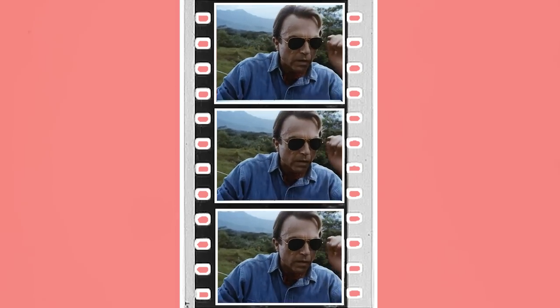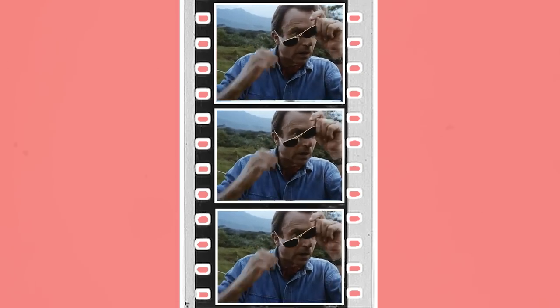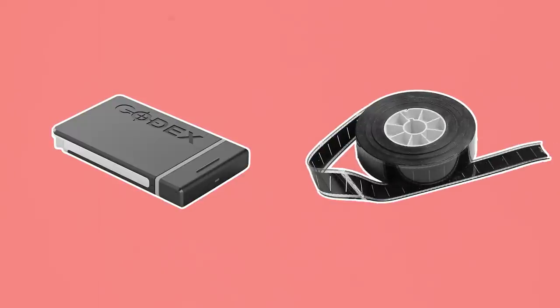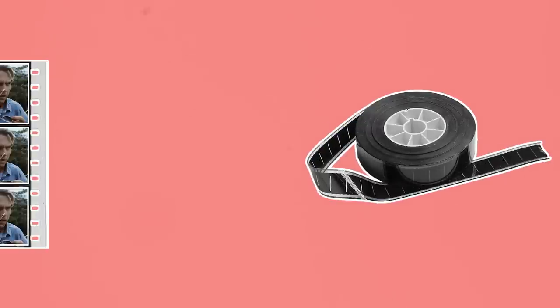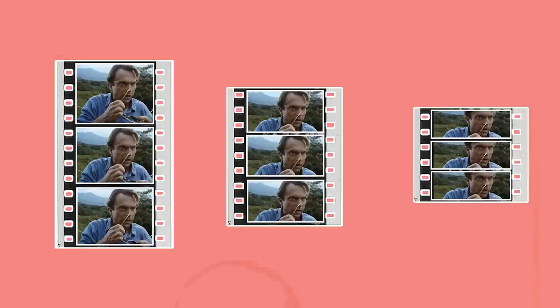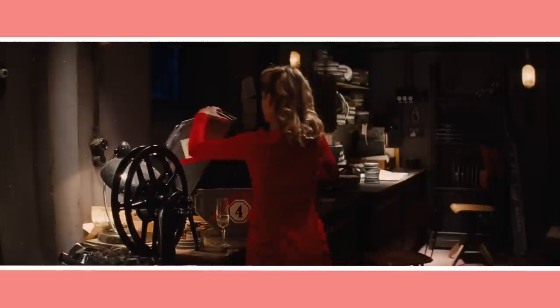The starting point when it comes to choosing which format to shoot a movie on is between digital and film. If film is selected, by far the most popular film format is 35mm. But what you may not know is that there are then three further format choices that need to be made between 2 perf, 3 perf, or 4 perf. But what is a perf and how does it affect both the budget and how the footage looks?